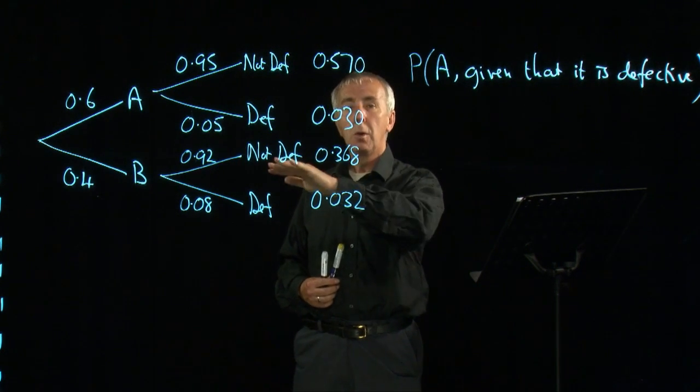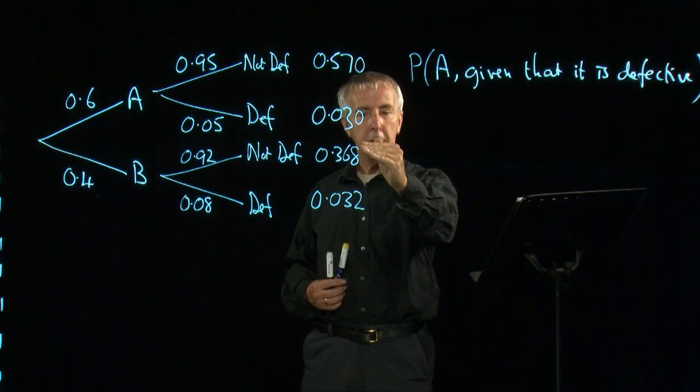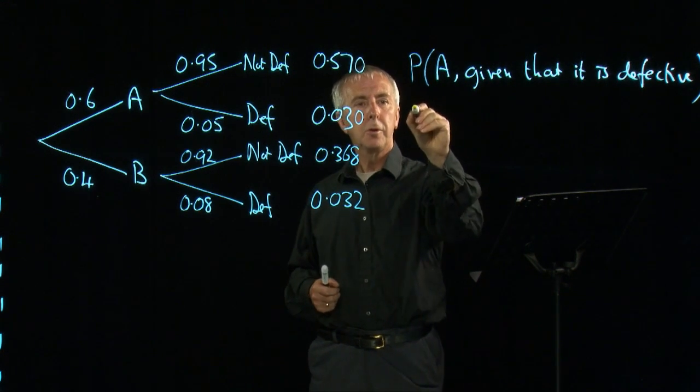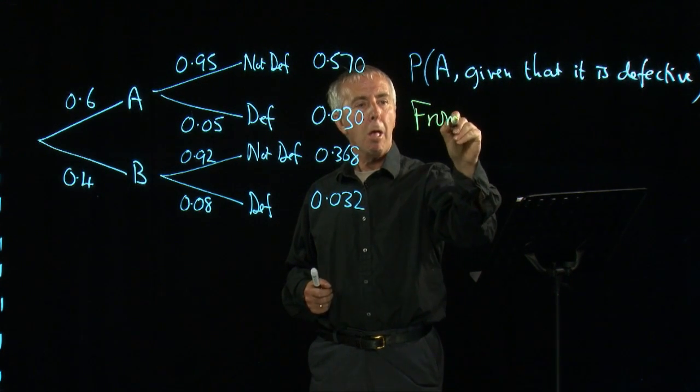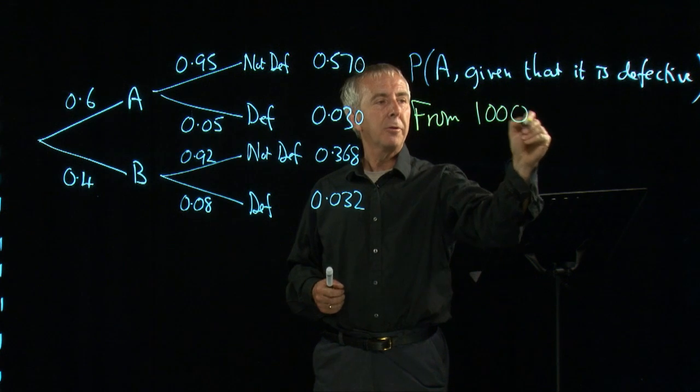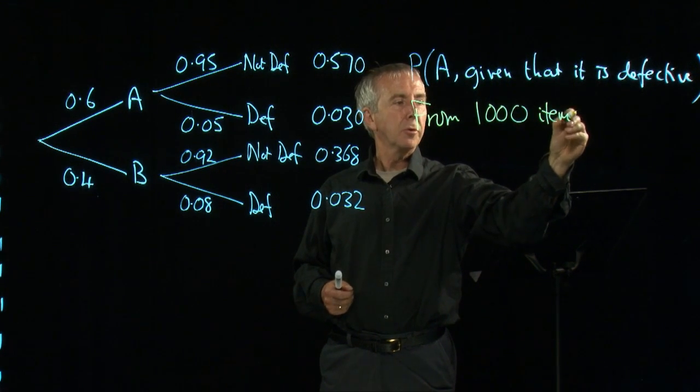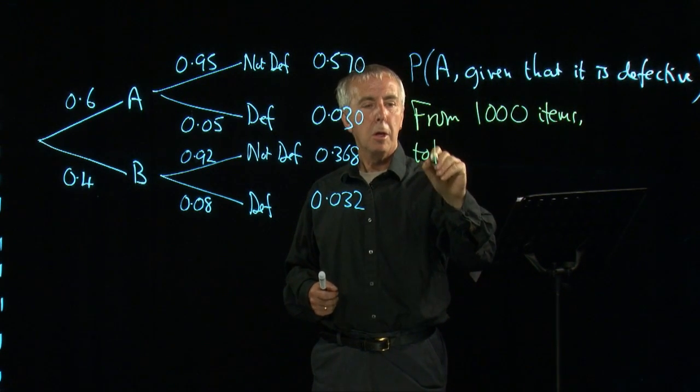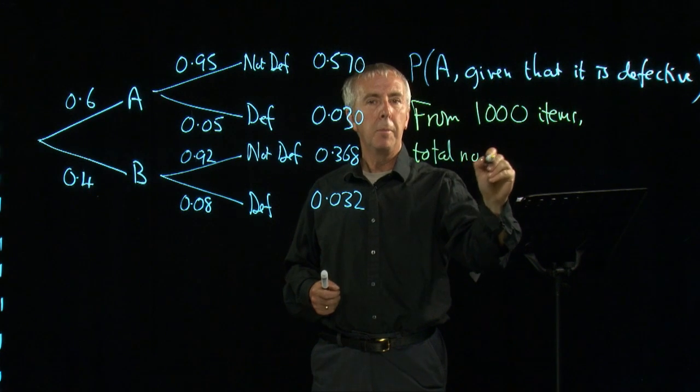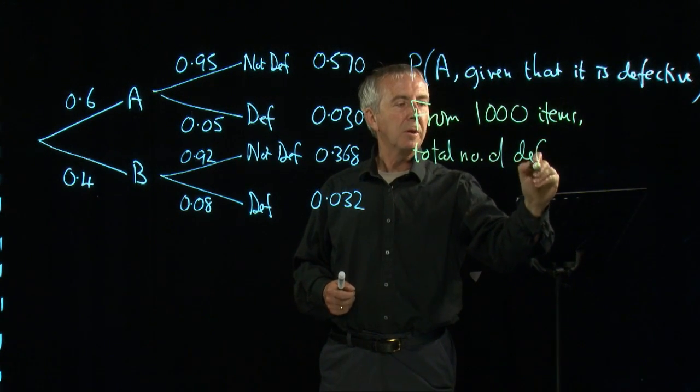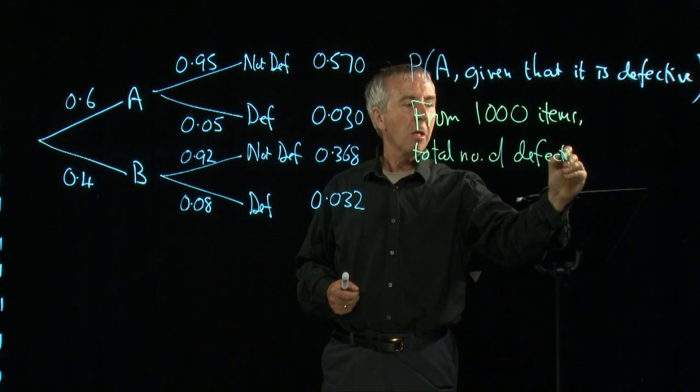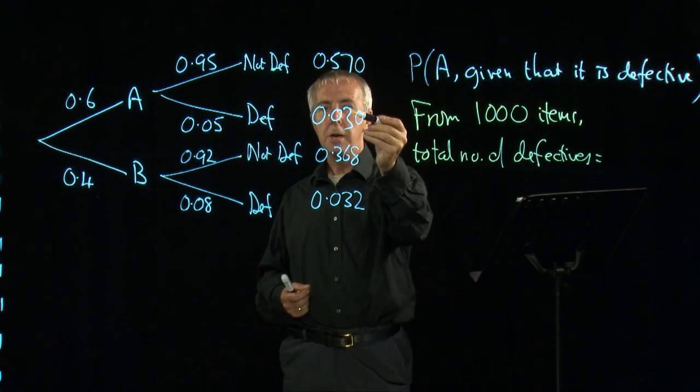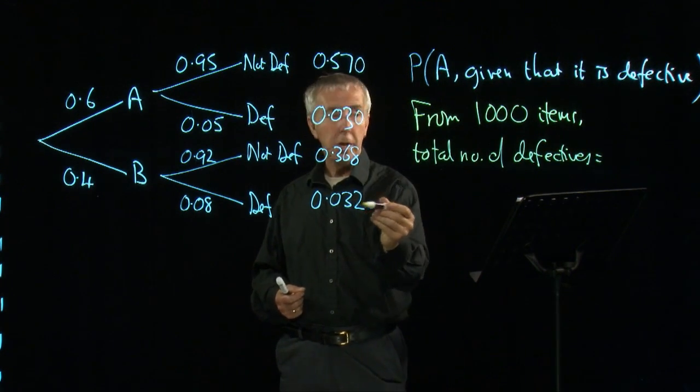And so on. 368 were from B and OK. So out of 1,000 items, the total number of defectives is, there's 30 here and there's 32 here.